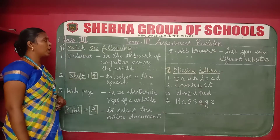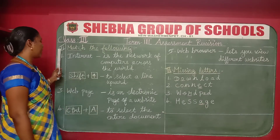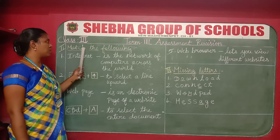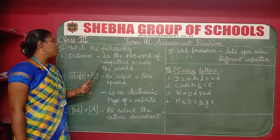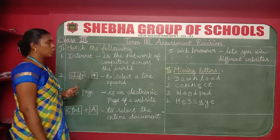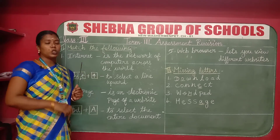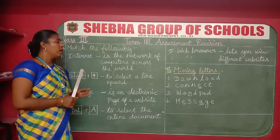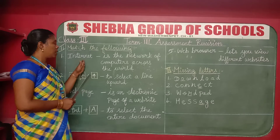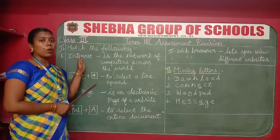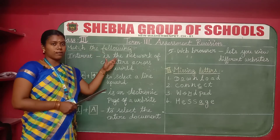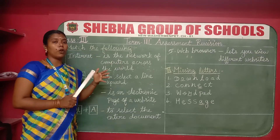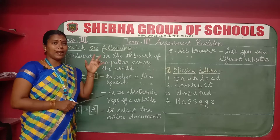Now we move to the second row: match the following. First, you have to read the question. In the matching question, don't put numbers and lines. Questions are on one side, options are shuffled, and you choose the correct answer.